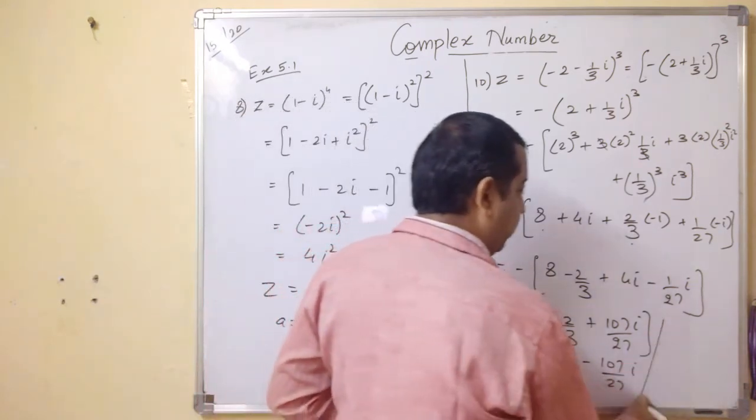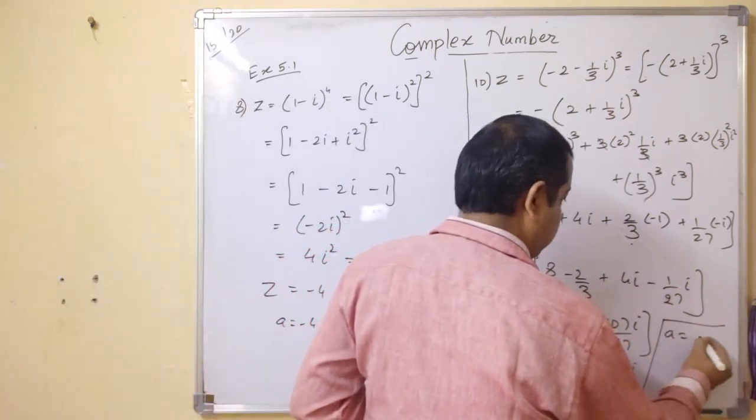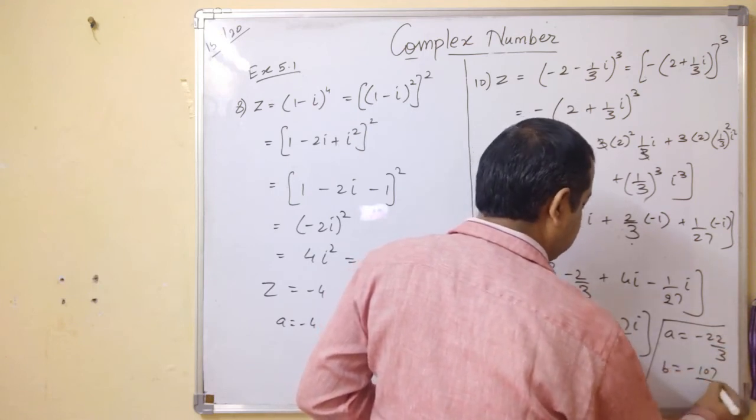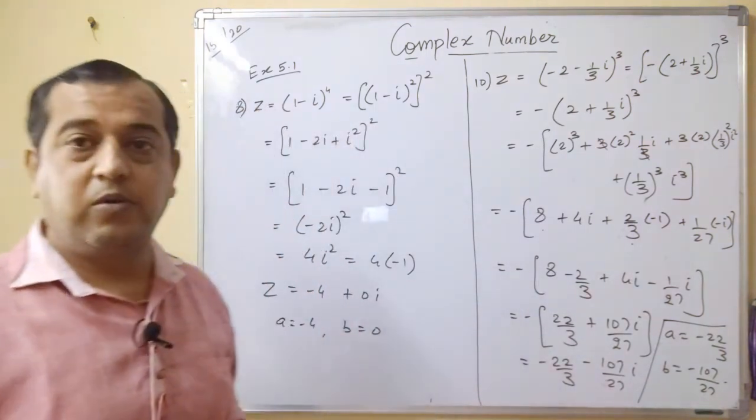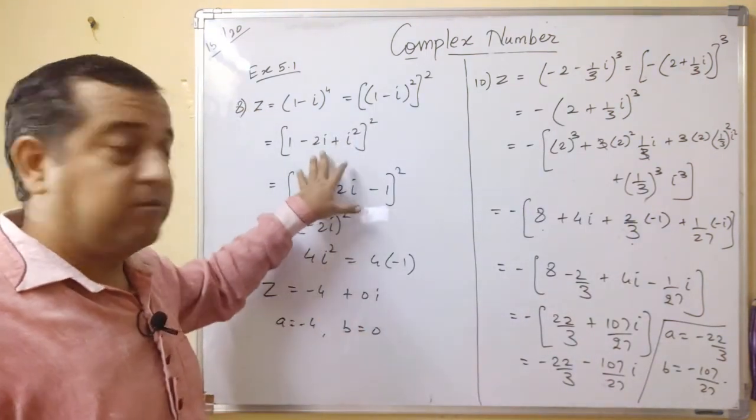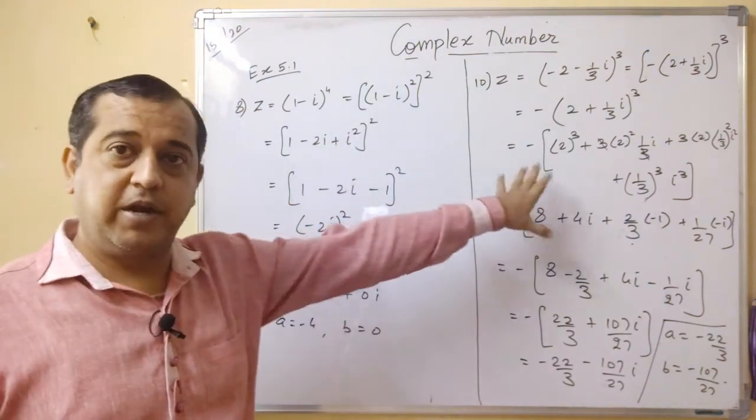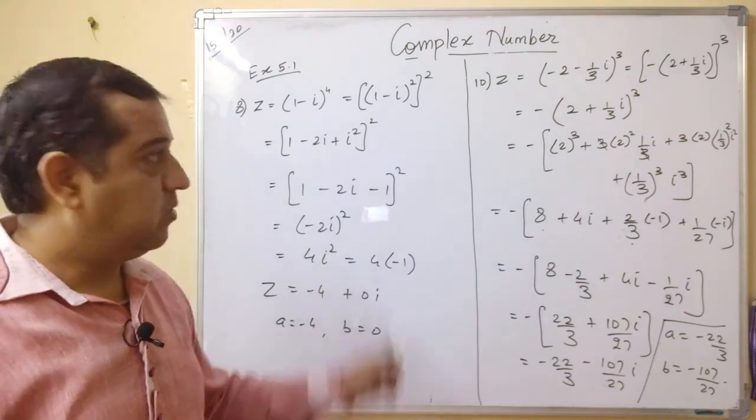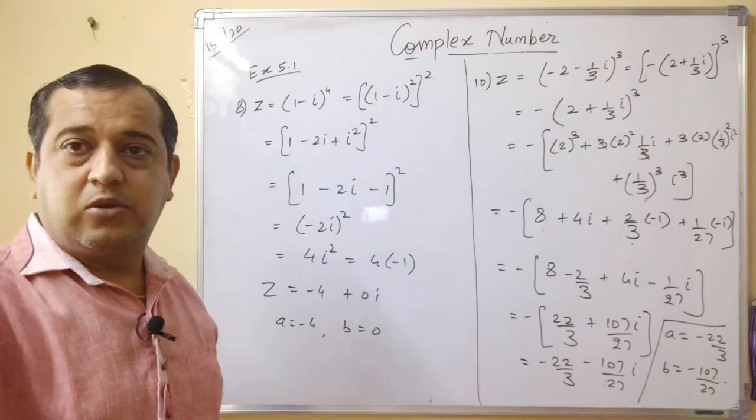So this is your a plus ib form, where a is minus 22 by 3 and b is minus 107 by 27. Very simple. Bracket square expansion, bracket cube expansion, converting them into a plus ib form. Please note it down.